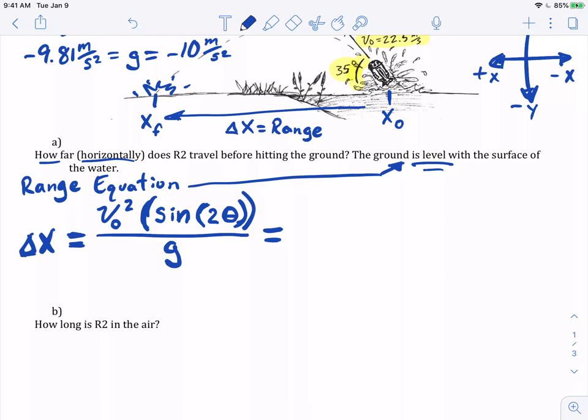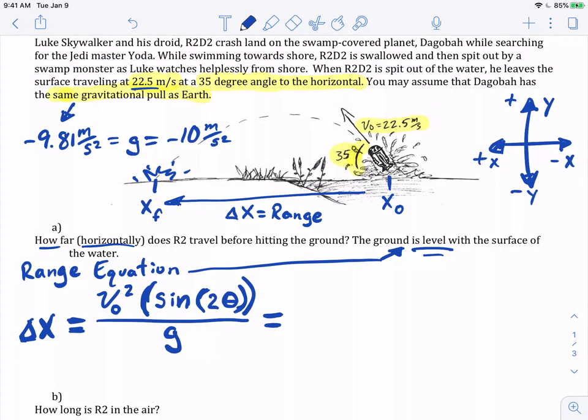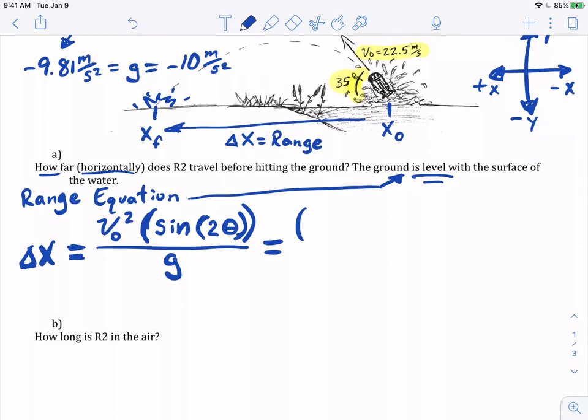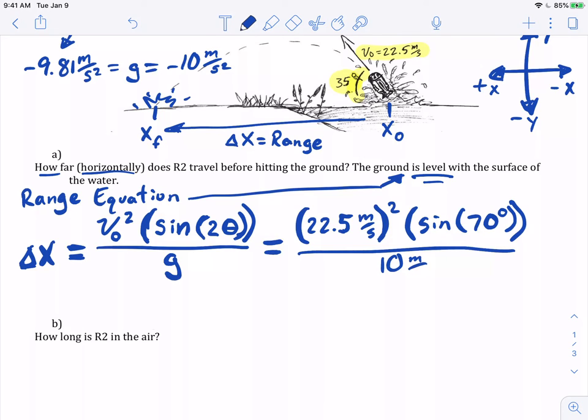We're going to plug in. What is our initial velocity? We're going to pull this right from our information: 22.5 meters per second. This is called substituting for your given information. Whenever I substitute, I put that number in parentheses. Then we have an angle of 35 degrees. Two times 35 degrees is 70 degrees, so we're going to do sine of 70 degrees, and then we're going to divide by the strength of gravity on Dagobah and Earth, which is 10 meters per second squared.